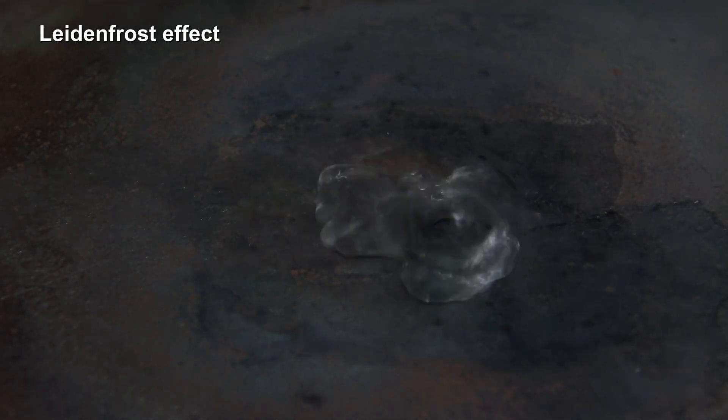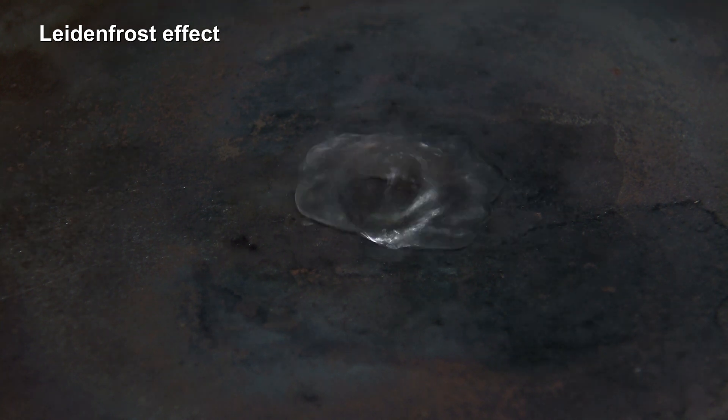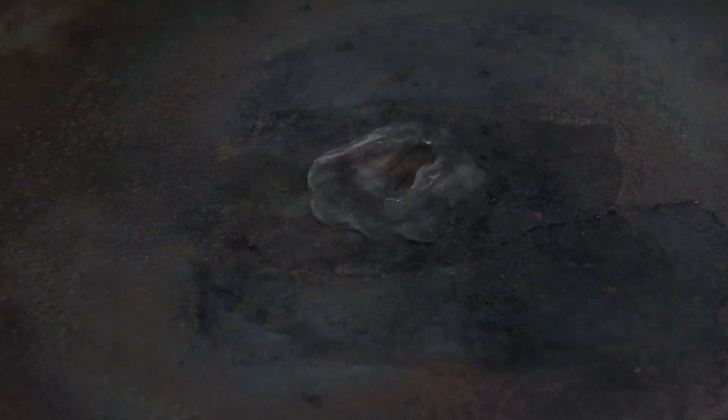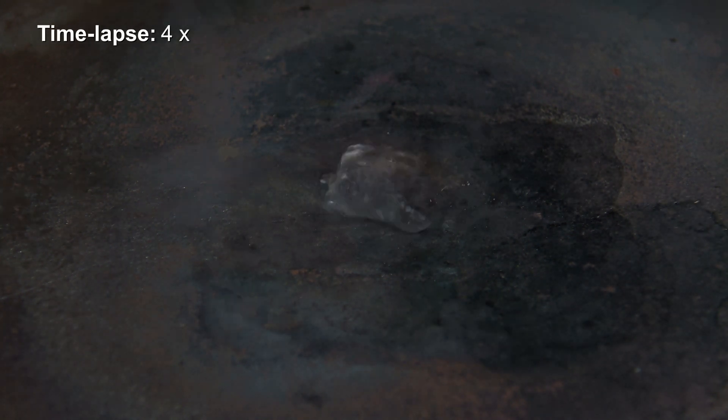When liquid nitrogen touches surfaces which are at room temperature the Leidenfrost effect can be observed. A part of the nitrogen evaporates very quickly forming an isolating layer of gas on which the liquid nitrogen is sitting. This causes it to evaporate more slowly.